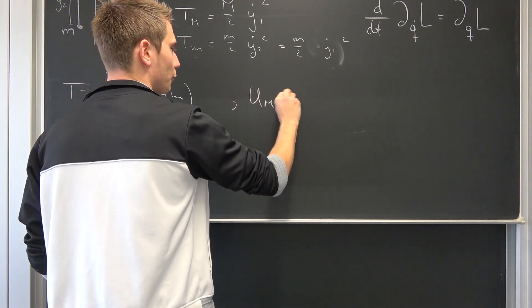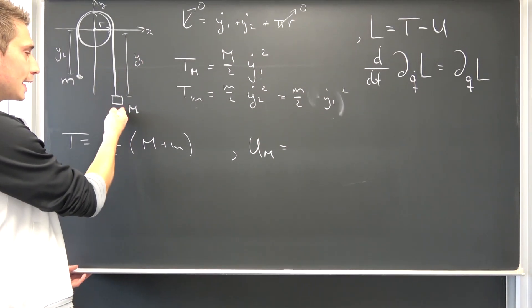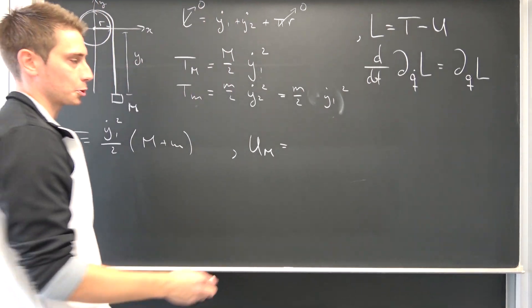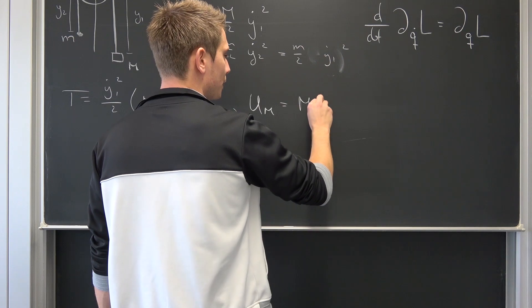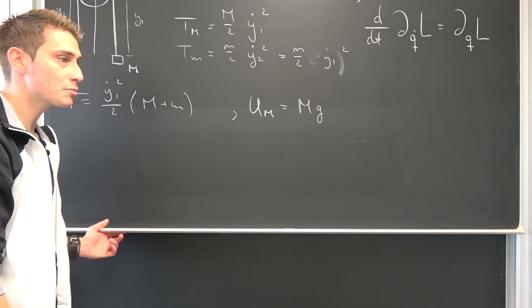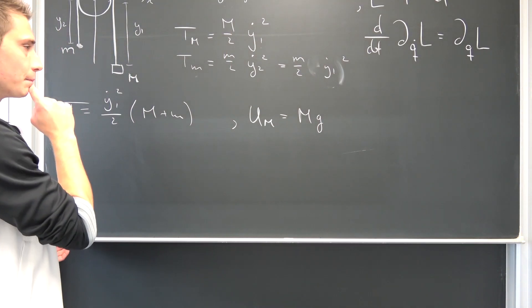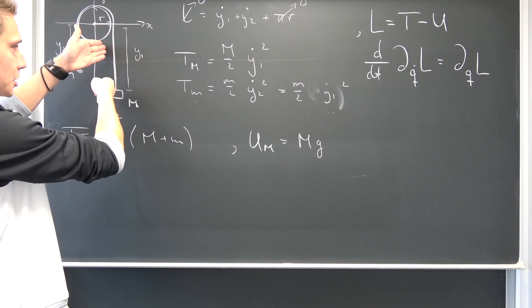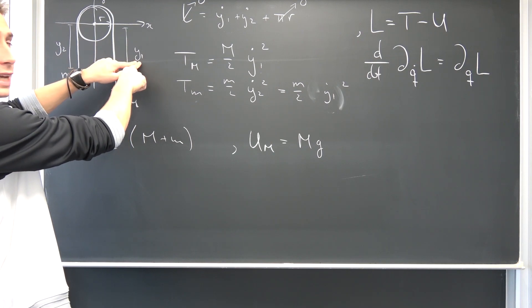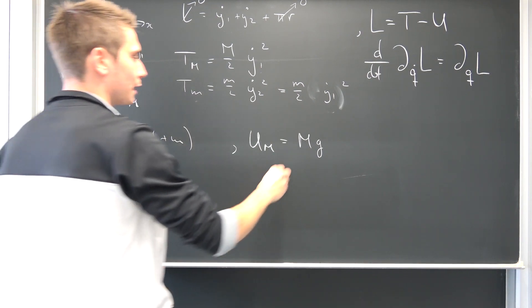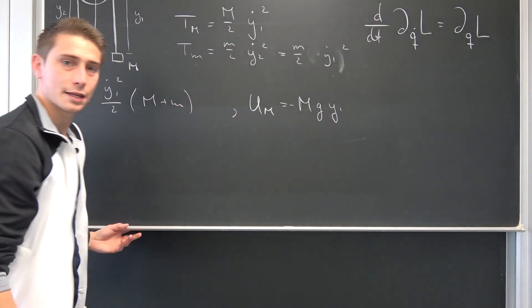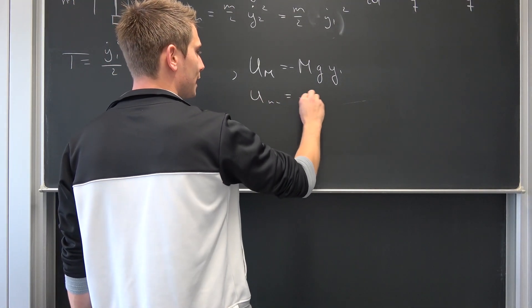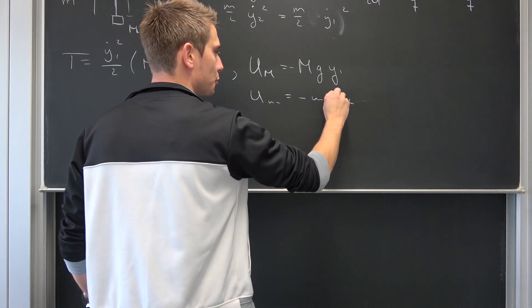Meaning our total kinetic energy T is thus those two added together. We have the same factor right here. So Y1 dot squared over 2, and then M plus small m. Now, what about our potential energies that we have right here? Let's say U of the big mass. Well, all that's really acting on our masses is yet again our gravitational attraction, our gravitational potential. Meaning we have M times g times—what do we have right here? Well, our big M goes down in the negative Y direction all the time, and the height is always negative Y1.